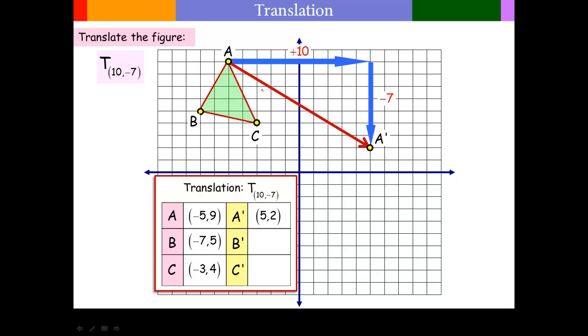And that just slides this entire shape like this. And these new positions here, these new points, B prime and C prime, notice that their X coordinates go up by 10 and their Y coordinates go down by 7.